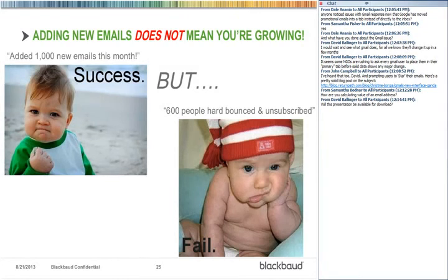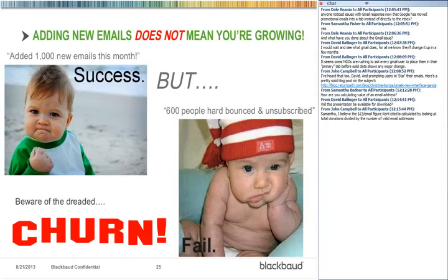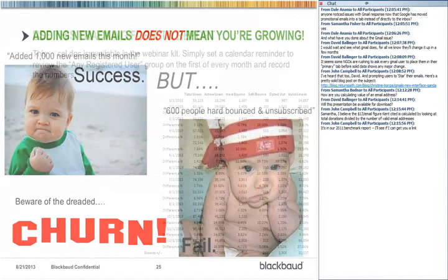None of those reports really tell you how you're doing as far as house file growth, because adding new emails does not mean you're growing. You can add 1,000 new emails in one month, which seems like a big success, but what those reports don't show is that 600 people hard bounced or unsubscribed. That's the dreaded word: churn. People's life cycle ends with your organization — they opt out, unsubscribe, soft bounce out, or just quit responding.